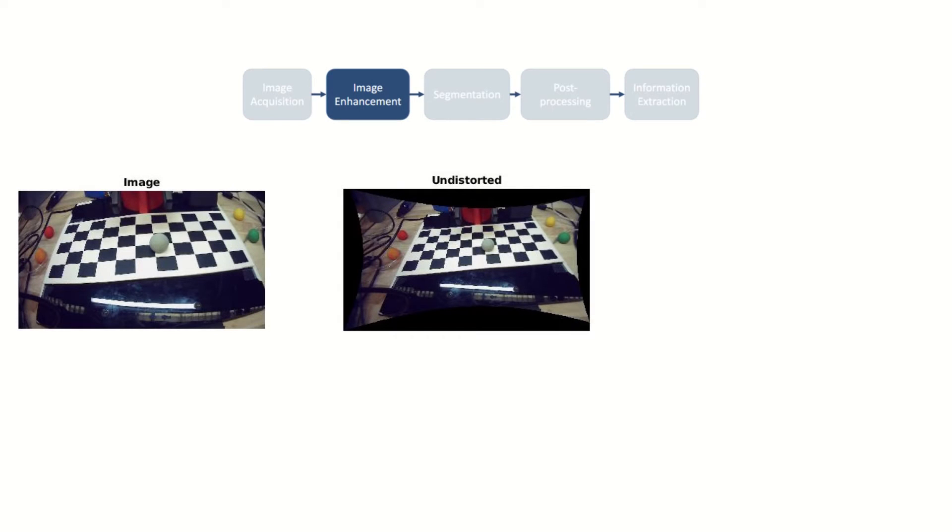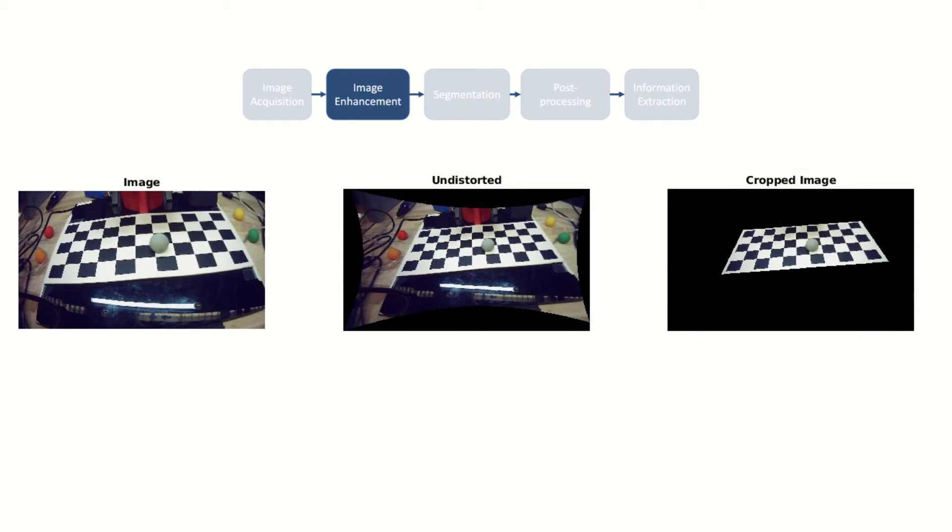First, we will do image enhancement by undistorting the fisheye lens to make sure the checkerboard lines always appear straight. We will then use a polygon mask to crop out everything outside the checkerboard so the robot does not get confused by the objects outside the desired working space.